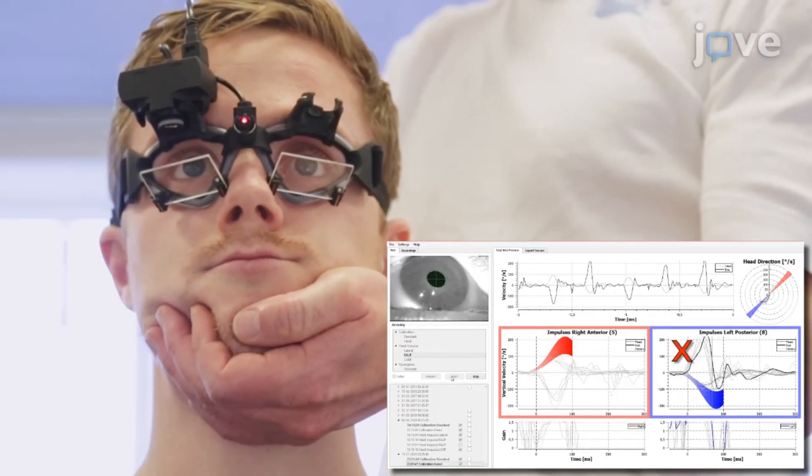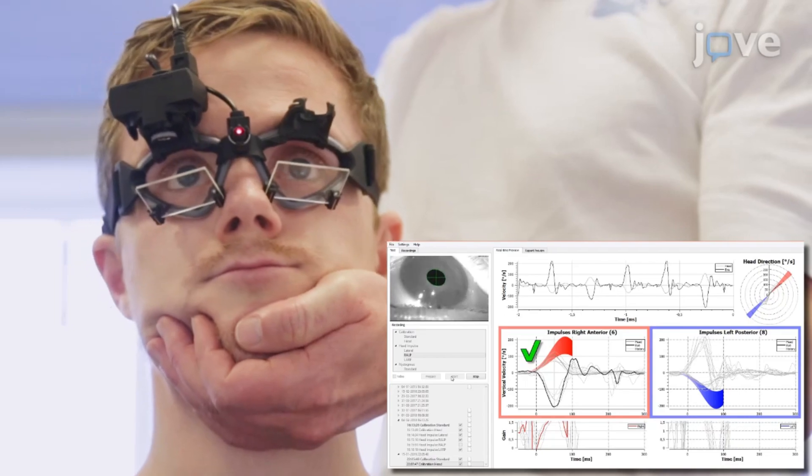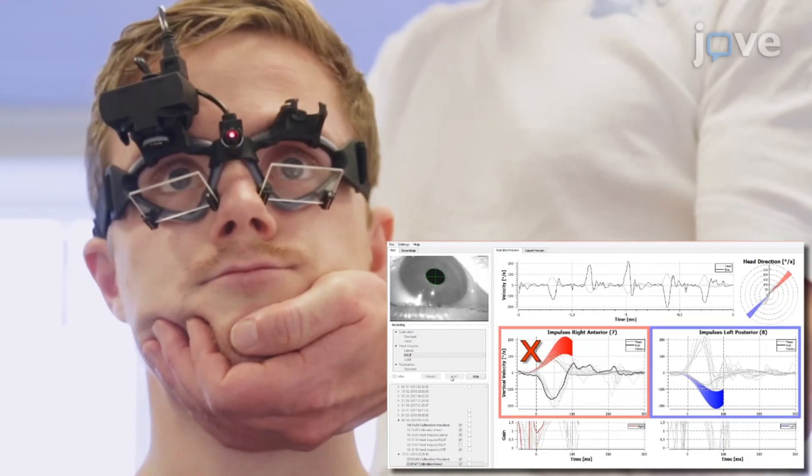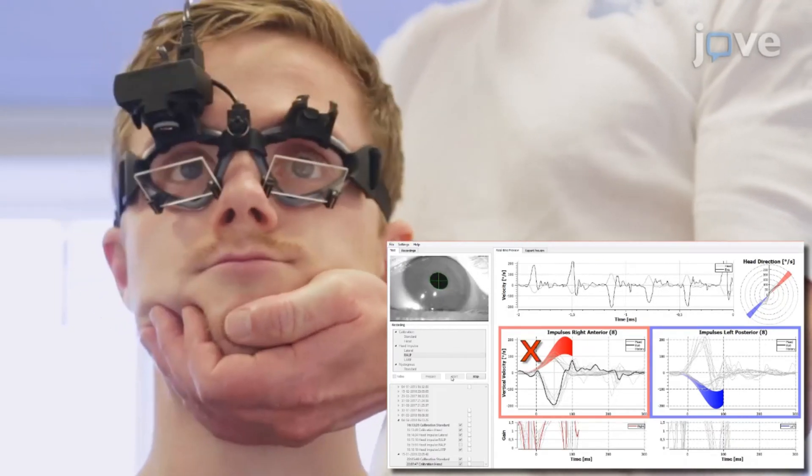Remember, head impulses need to be fast, abrupt, unpredictable, with high acceleration, and with low amplitude. Finally, after completion of the VHIT test, evaluate and interpret the test report.